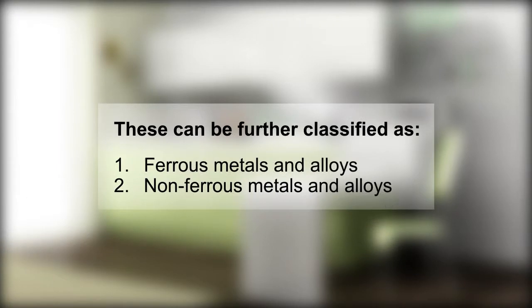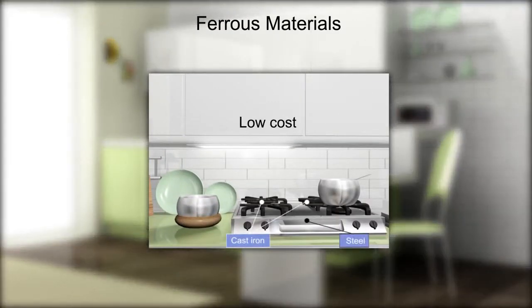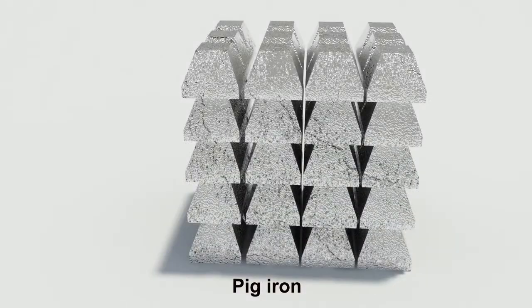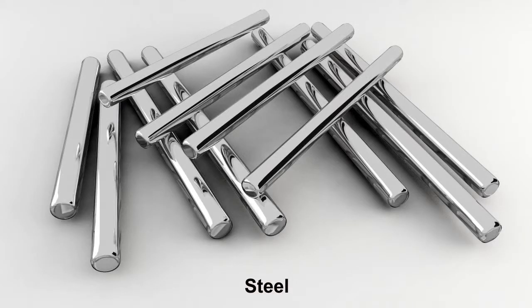Metals can be further classified as ferrous metals and alloys, and non-ferrous metals and alloys. Ferrous materials contain iron as their main constituent and are most widely used because of their low cost and varied mechanical properties. Examples are cast iron, pig iron, raw iron, steel, etc.